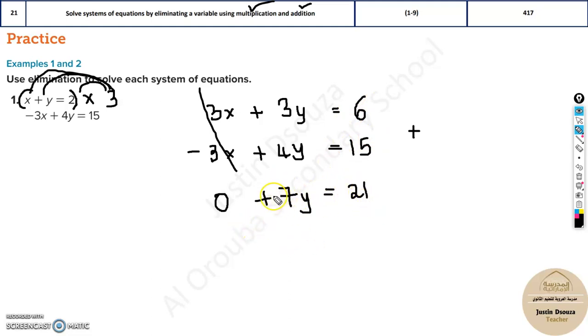Now, all we do is take the 7. This is 7y equals 21. Divide both the sides by 7 or take 7 to the other side. It will be y equals 21 by 7. Answer for y is 3. So this is how we solve. Next, we found the y. All you do is substitute back into any of this equation. You will find x.